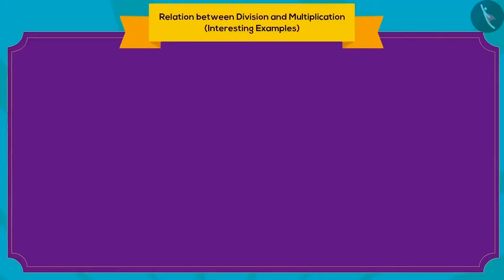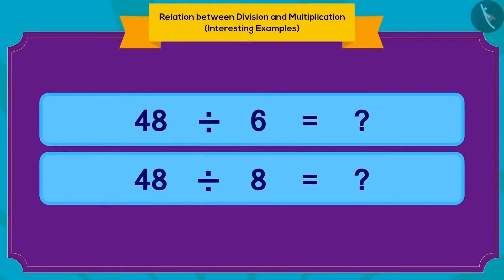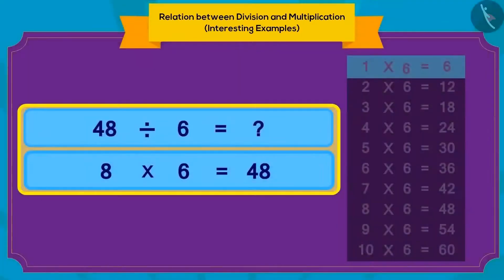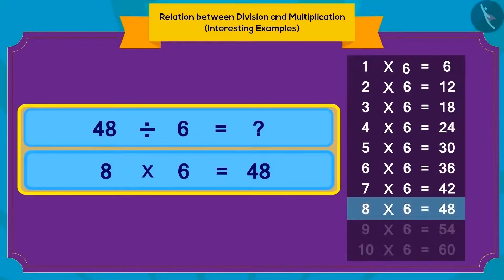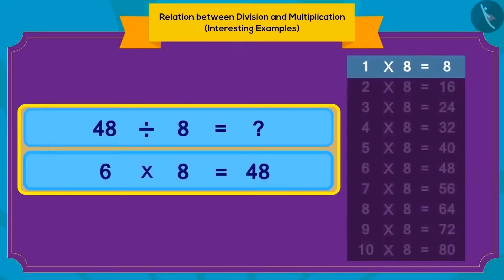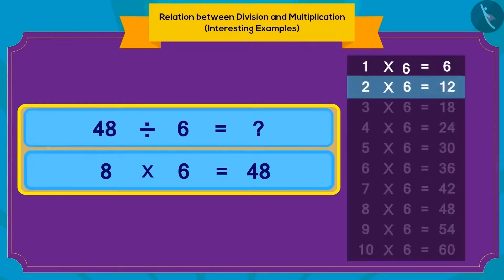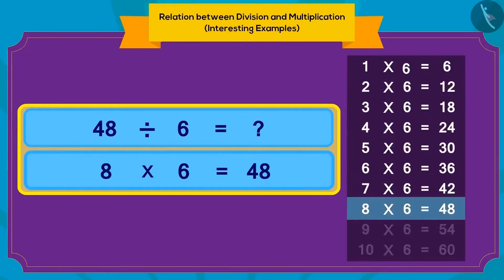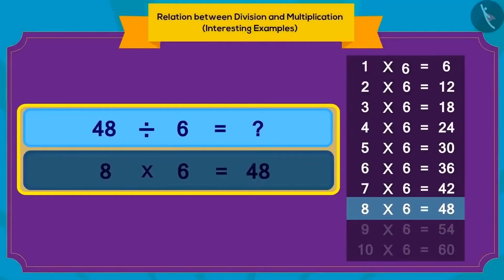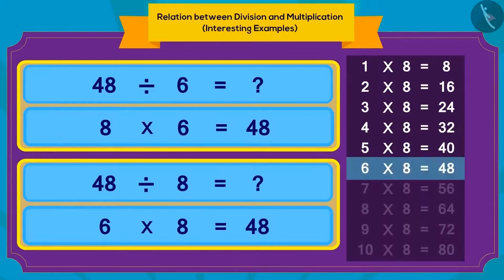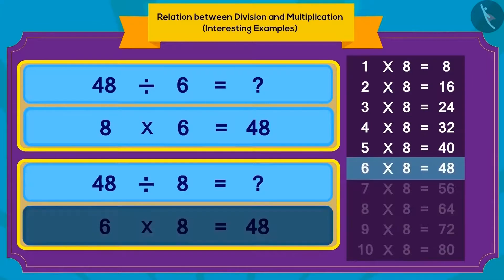Can we use multiplication to answer a division question? Yes! To find the answer for a division question, look up the multiplication table. In the table of six, what multiplied by six equals 48? Six times eight is 48. In the table of eight, what times eight equals 48? Eight times six equals 48. In this way, we can use multiplication to figure out the answer for division.